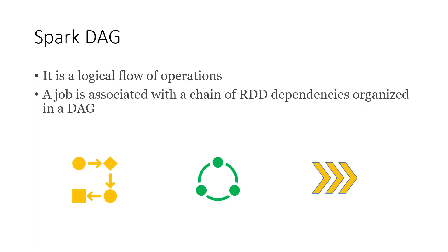In terms of Spark, a DAG is nothing but a logical flow of operations. Whenever we write a Spark program, there are certain operations we want to do, and the logical flow created by Spark is known as a DAG. A job is associated with a chain of RDD dependencies organized in a DAG — a logical plan and then a physical plan which will actually execute.